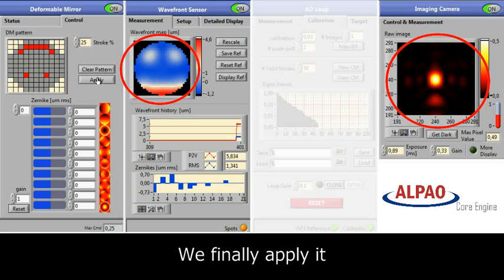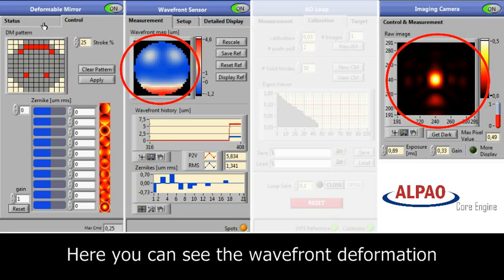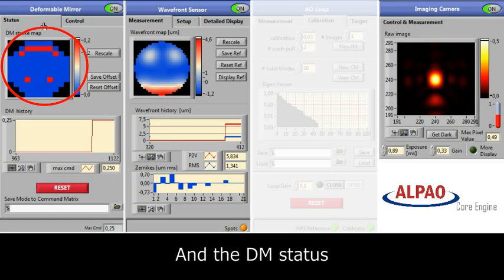Once we apply the pattern, we should be able to see this in the second tab on our wavefront sensor, and we should also be able to see the change on our imaging camera.